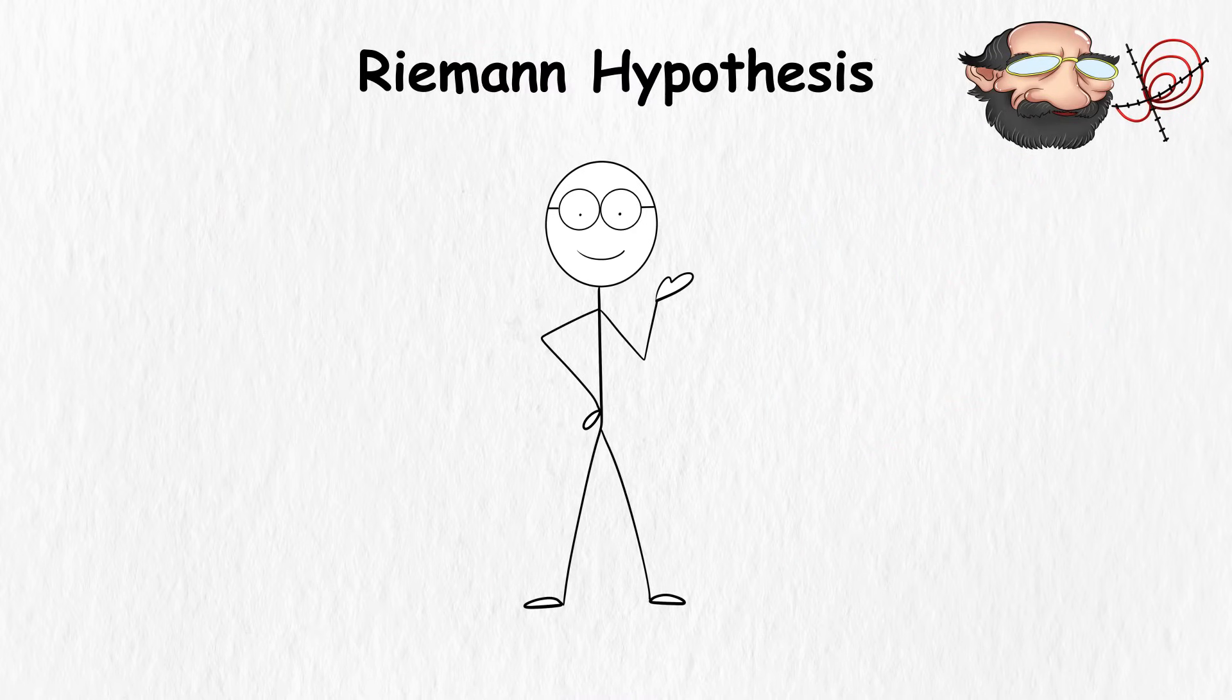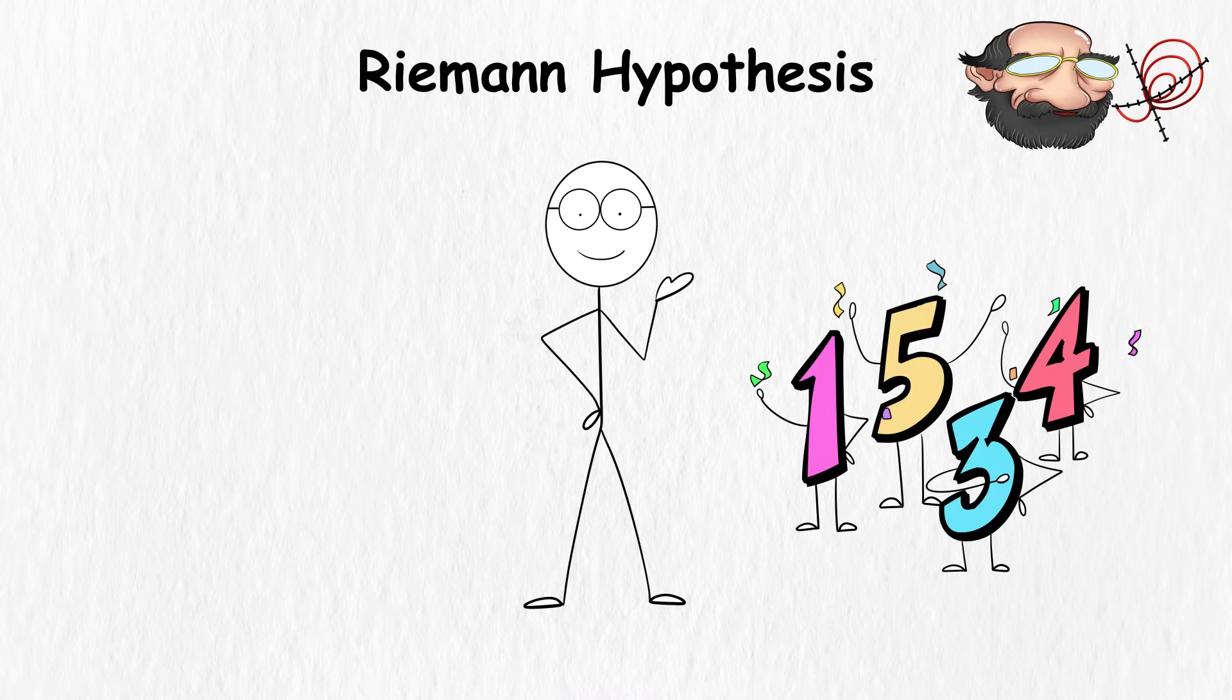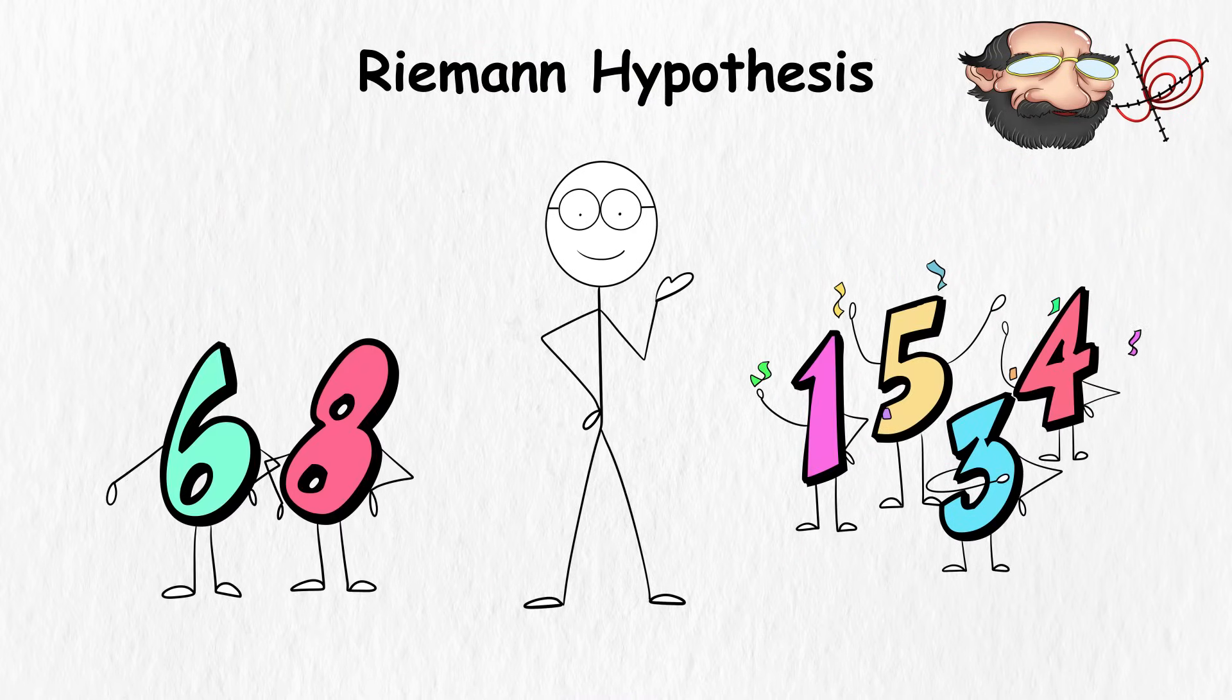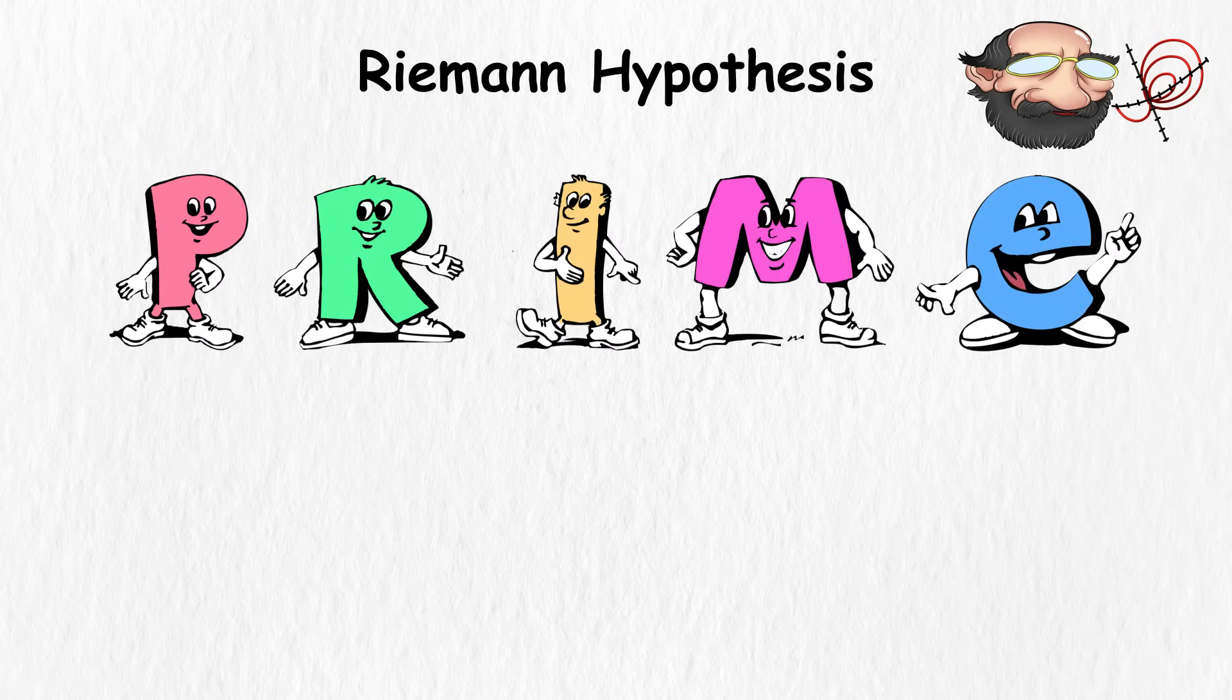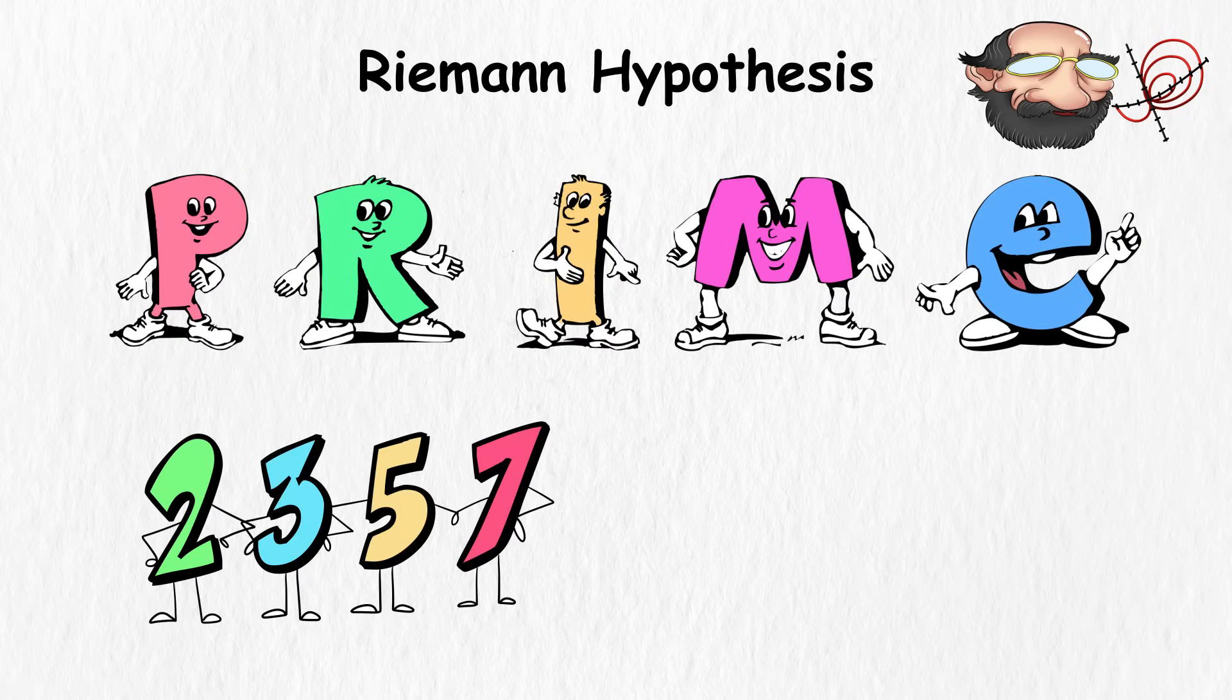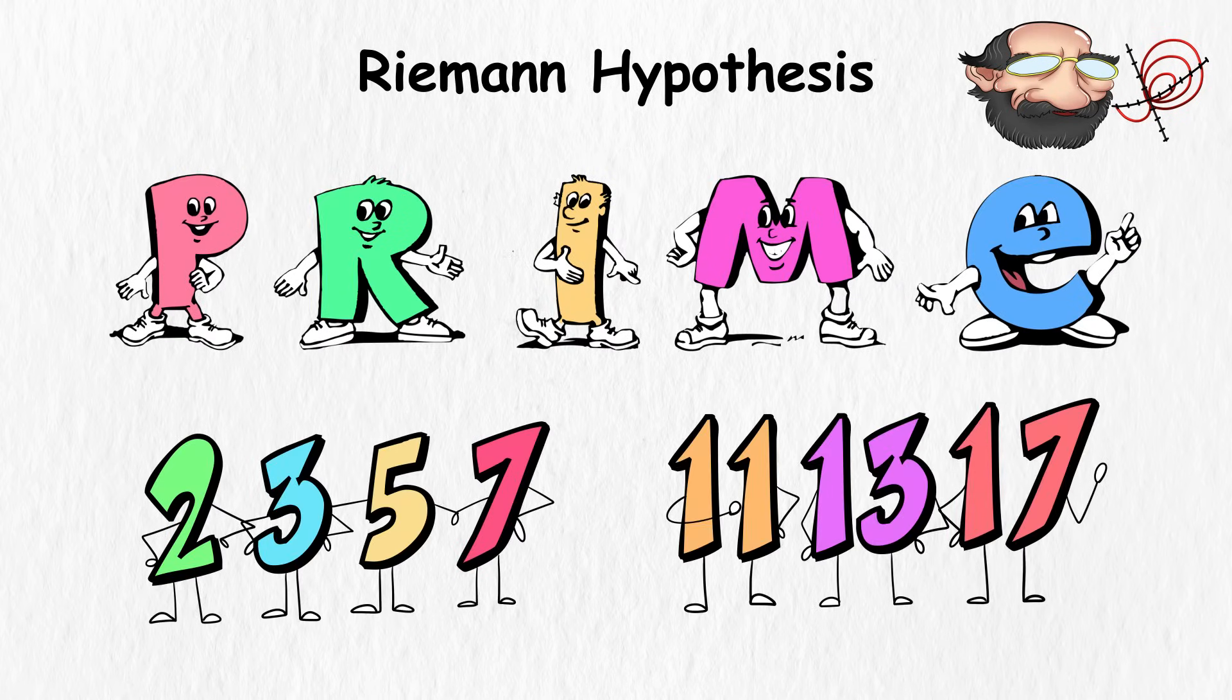Riemann hypothesis. Let's say you're at a number party. Most numbers are just mingling around, but there are these VIP numbers called primes, namely 2, 3, 5, 7, and their exclusive buddies.